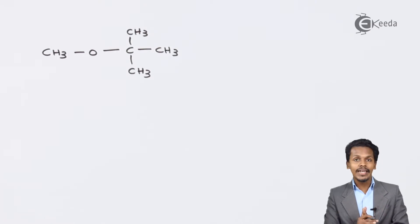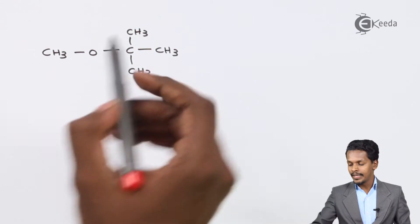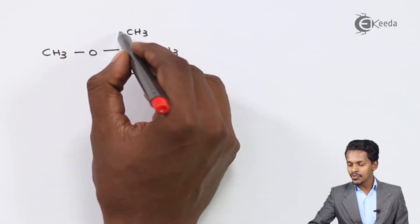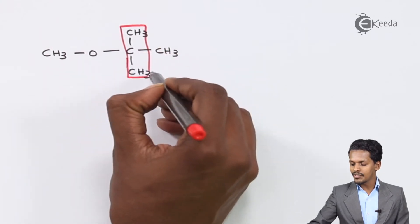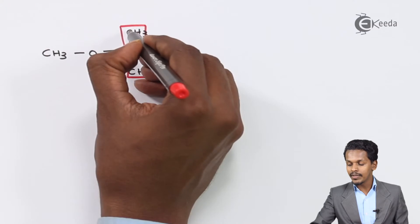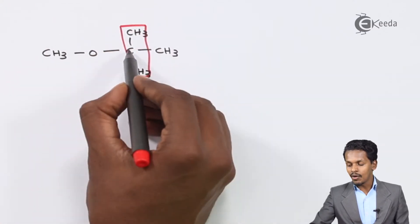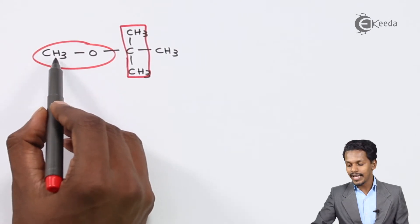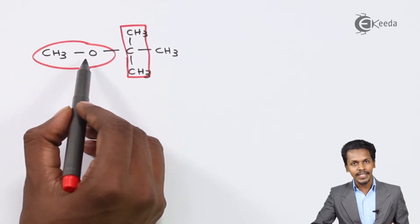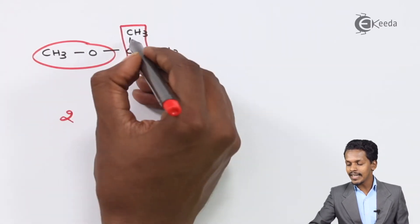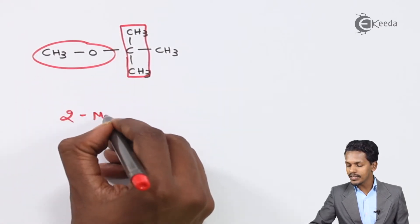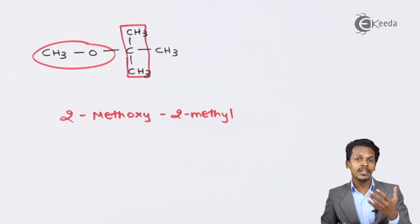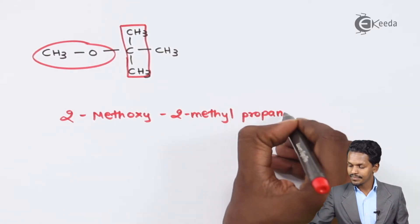The second example: we consider which group is the parent chain. We observe a methyl group and a tertiary butyl group. Counting the carbon atoms in the straight chain: carbon 1, carbon 2, carbon 3 — and on carbon 2 we find a methyl group. Since methyl is the smaller group, it attaches to the oxygen atom and becomes methoxy. Because it is on the second carbon atom, we name it 2-methoxy. There is also a 2-methyl substituent, and the total carbon count in the straight chain is 3, so the parent chain is propane.